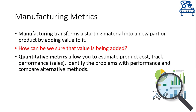In a manufacturing system, some value is added into a starting raw material, but there should be some mechanism to ensure that value is being added. Therefore, we resort to some quantitative metrics — numbers that can give us an idea whether we are achieving the value addition we wished for. These metrics allow us to adjust our thinking, estimate the product cost, track its performance, and most importantly, compare different methods for manufacturing the same product.